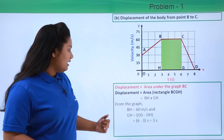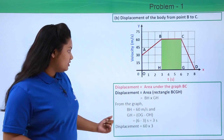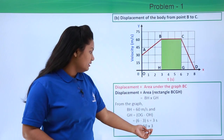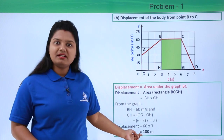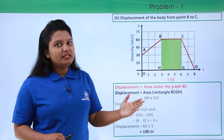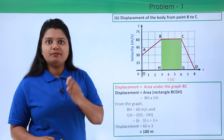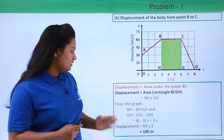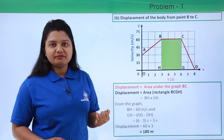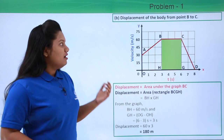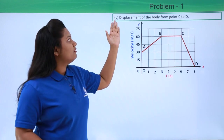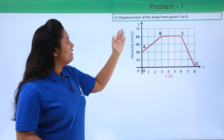Multiplying BH and GH gives 60 times 3, which is 180 meters. So from point B to point C, the body has covered a displacement of 180 meters.